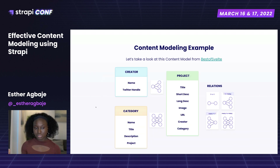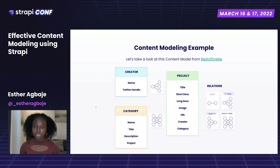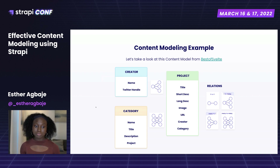We have three different content types: creator, category, and project. We've identified the fields under each — for example, the creator content type has a name and a Twitter handle. Between creator and project, there's a one-to-many relationship, meaning a creator can have more than one project. Between category and project, there's a many-to-many relationship, meaning a project can be referenced in one or many categories and vice versa.